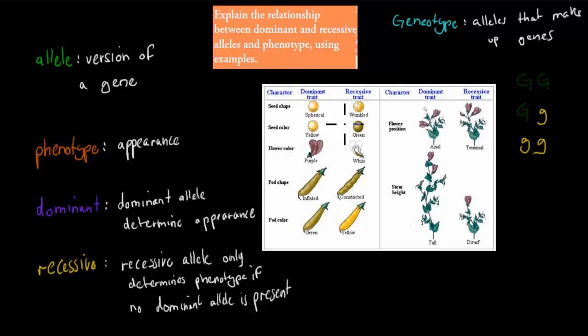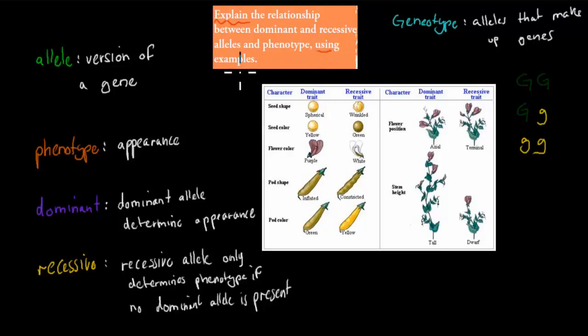In the last video we distinguished between homozygous and heterozygous alleles and what the difference between the two was. While doing this we will look over the next dot point which says explain the relationship between dominant and recessive alleles and phenotypes using examples. Just a couple of words that are in the syllabus dot point we should go over again — it says allele here.